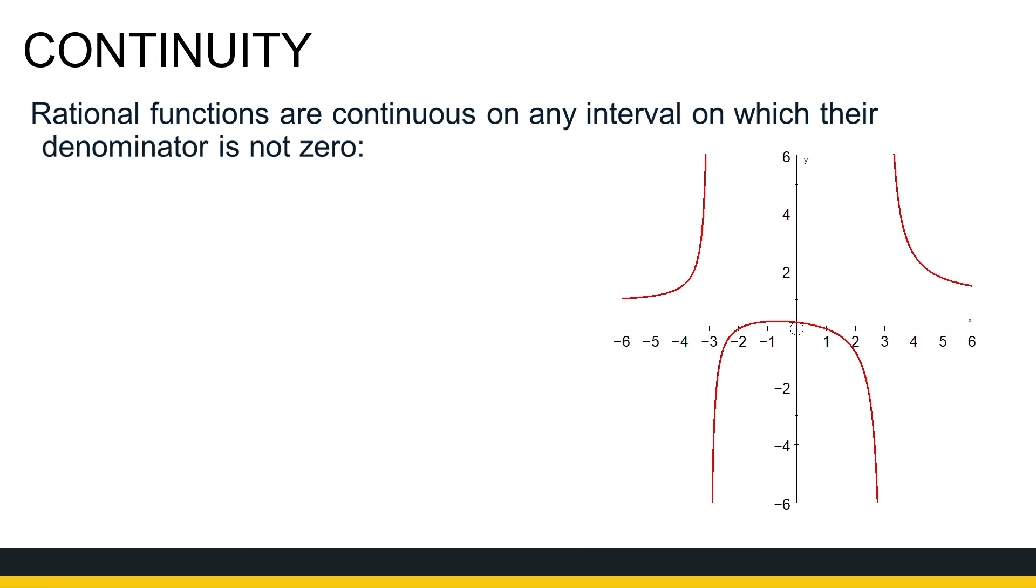Rational functions are continuous on any interval on which the denominator is non-zero. If I exclude those values where the asymptotes are, where the denominator is zero, it's continuous in this section from minus six to minus three, between minus three and three, and larger than three. Rational functions are continuous on any interval on which the denominator is non-zero.